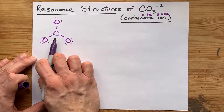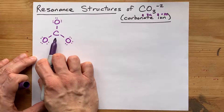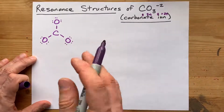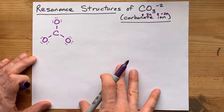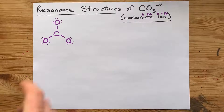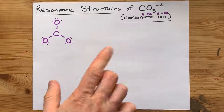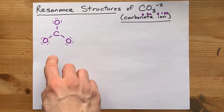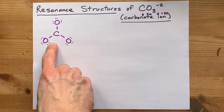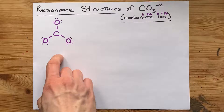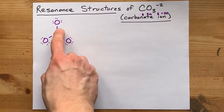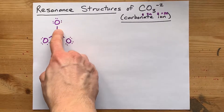You'll note that the carbon does not have a full octet, and carbon absolutely needs a full octet. So the question is: are we going to move a lone pair to make a double bond here, or from here, or from here?